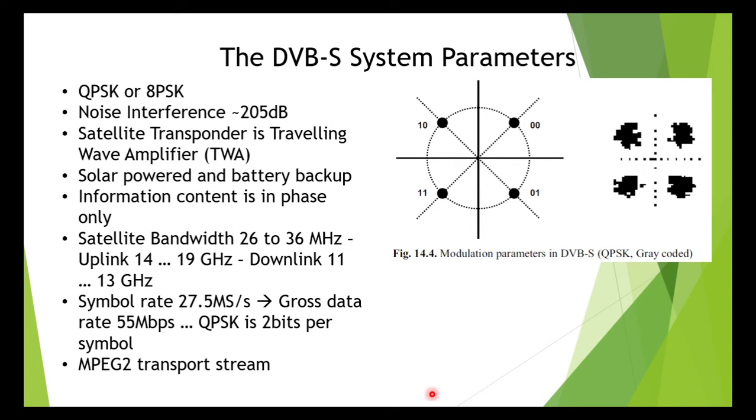For example, 33 megahertz in Astra 1F, 36 megahertz in Eutelsat Hotbird 2. The uplink is in the 14 to 19 gigahertz band and the downlink is 11 to 13 gigahertz. It is then necessary to select a symbol rate which produces a spectrum which is narrower than the transponder's bandwidth. The symbol rate selected is therefore often 27.5 mega symbols per second, so gross data rate is equal to 2 bits per symbol into 27.5 mega symbols per second, which is equal to 55 megabits per second.